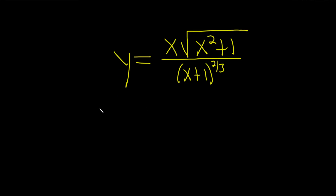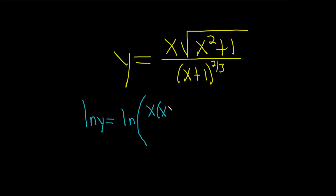We'll start by taking the natural log on both sides. So here we have ln of y equals the natural log of this expression. We'll write the square root as something to the one-half power, so x squared plus 1 to the one-half, over x plus 1 to the two-thirds.